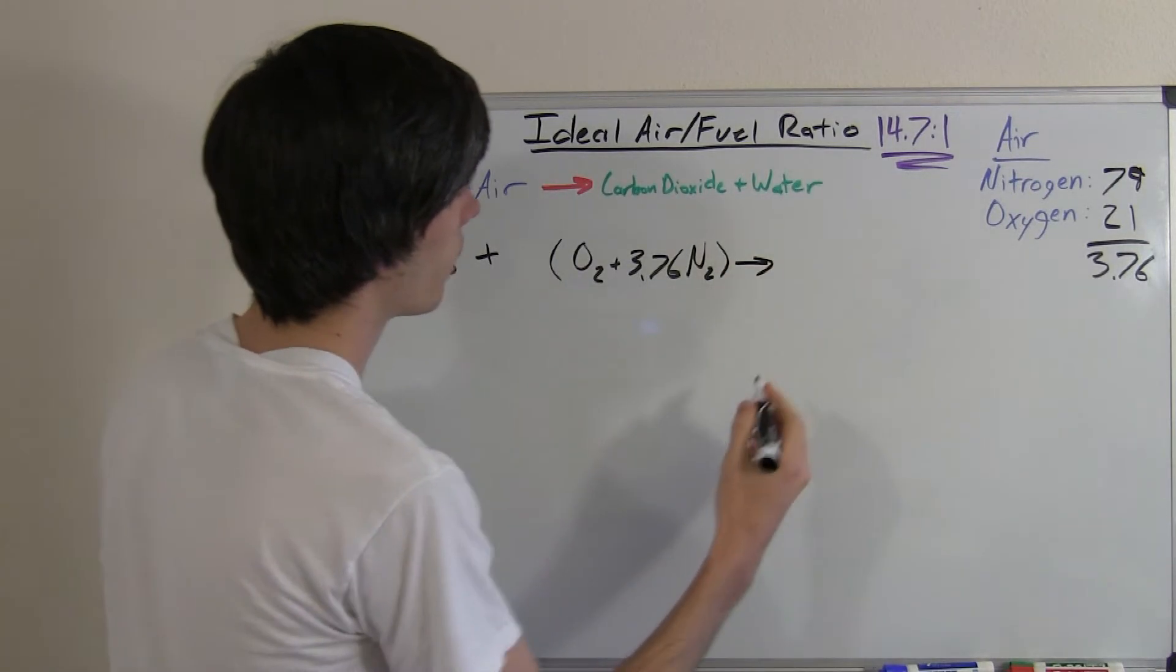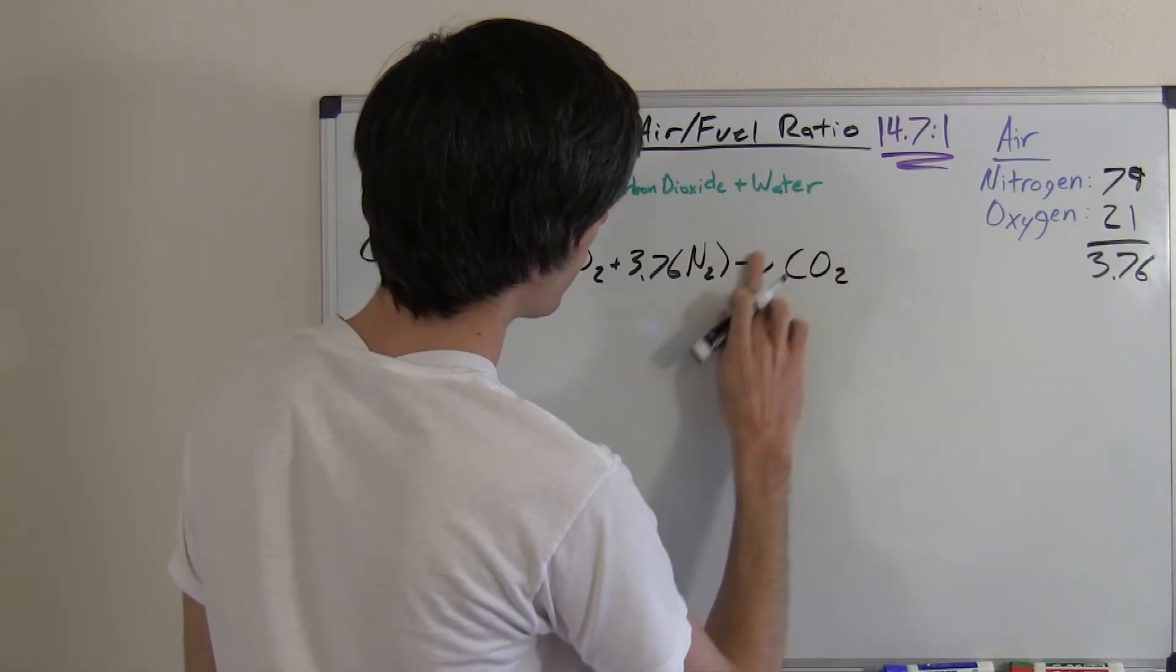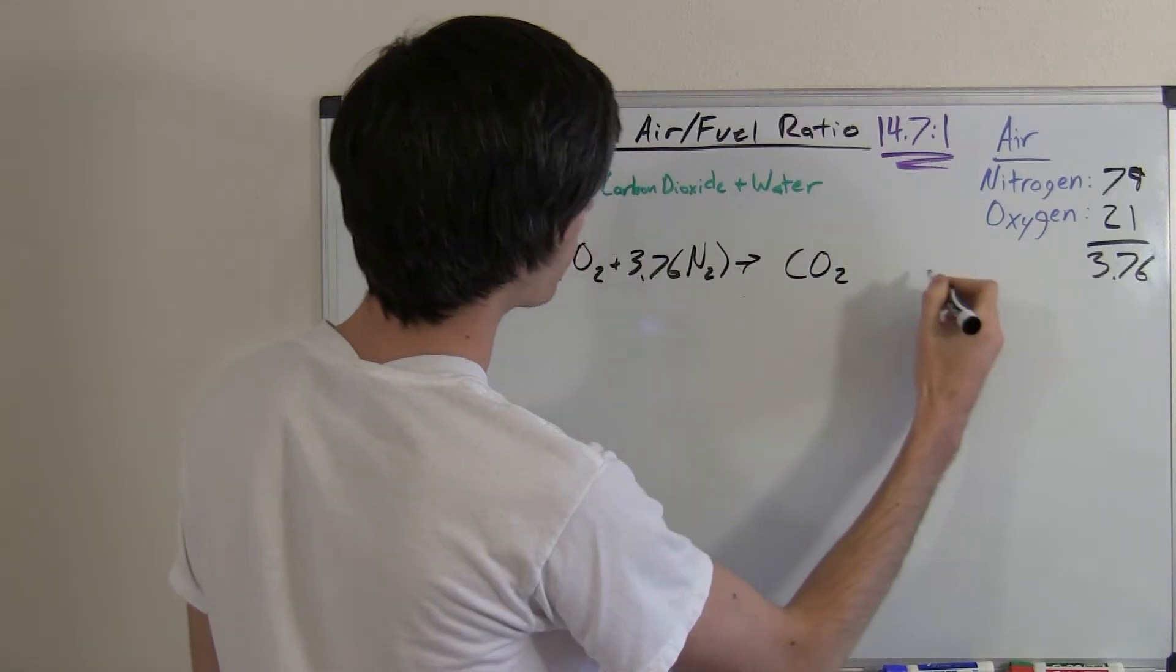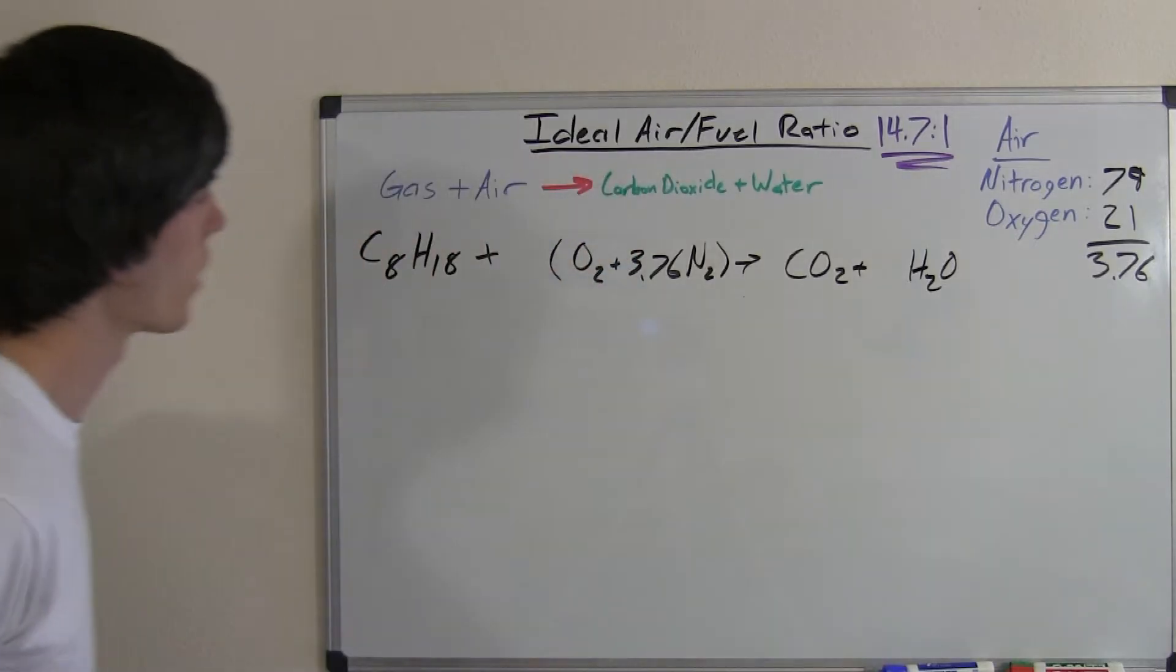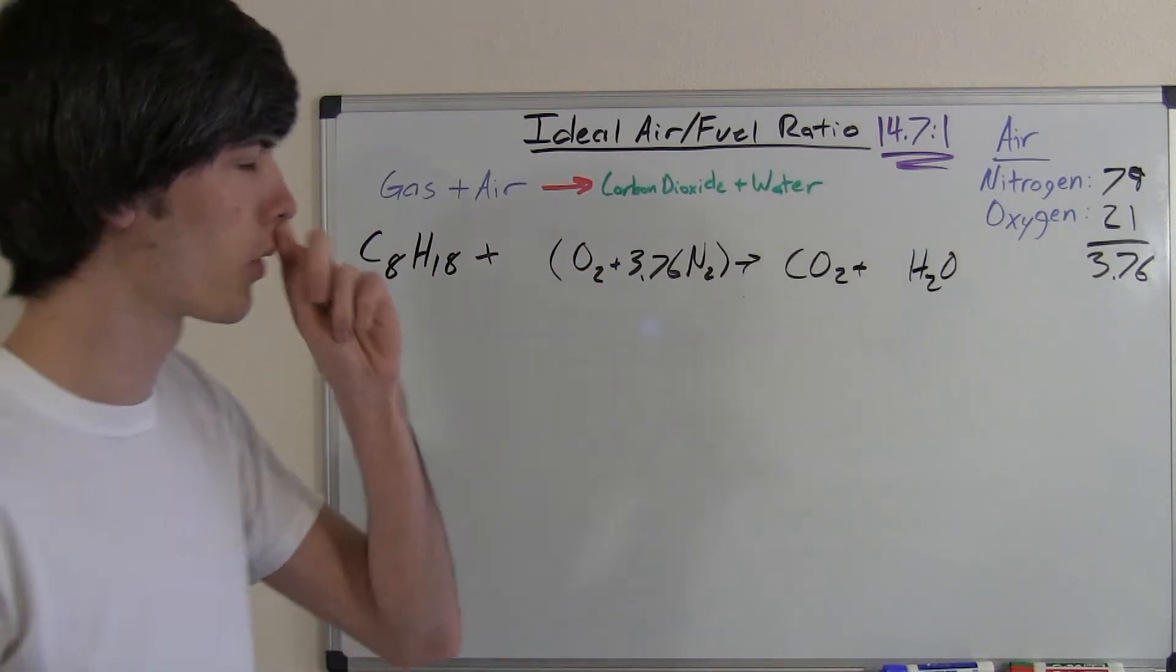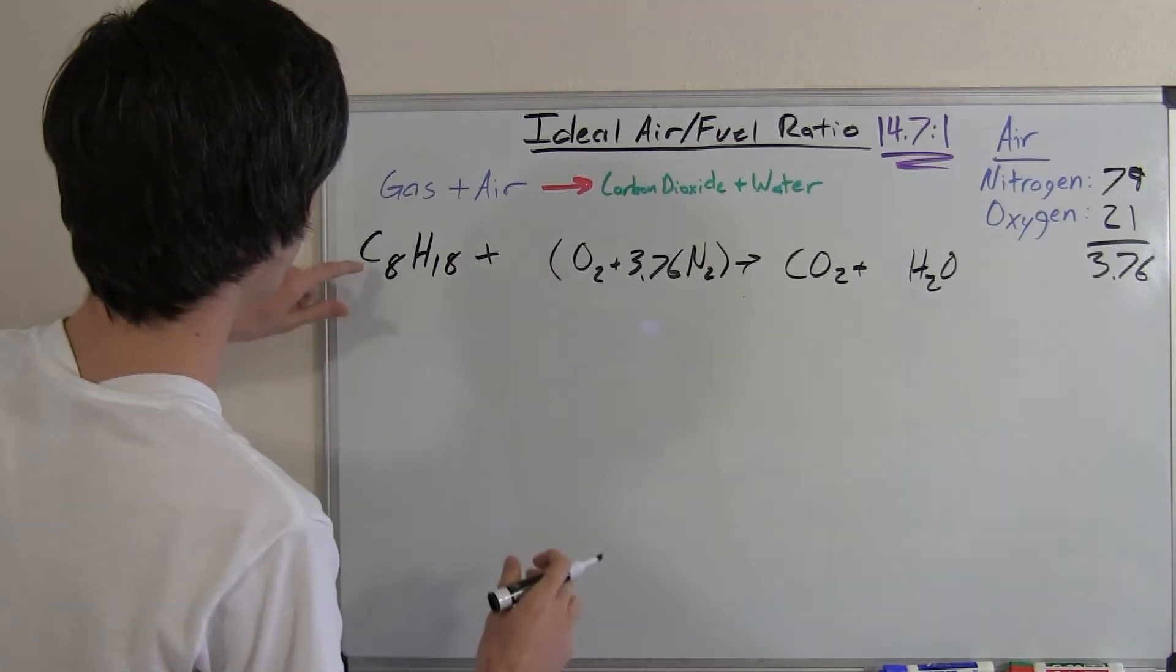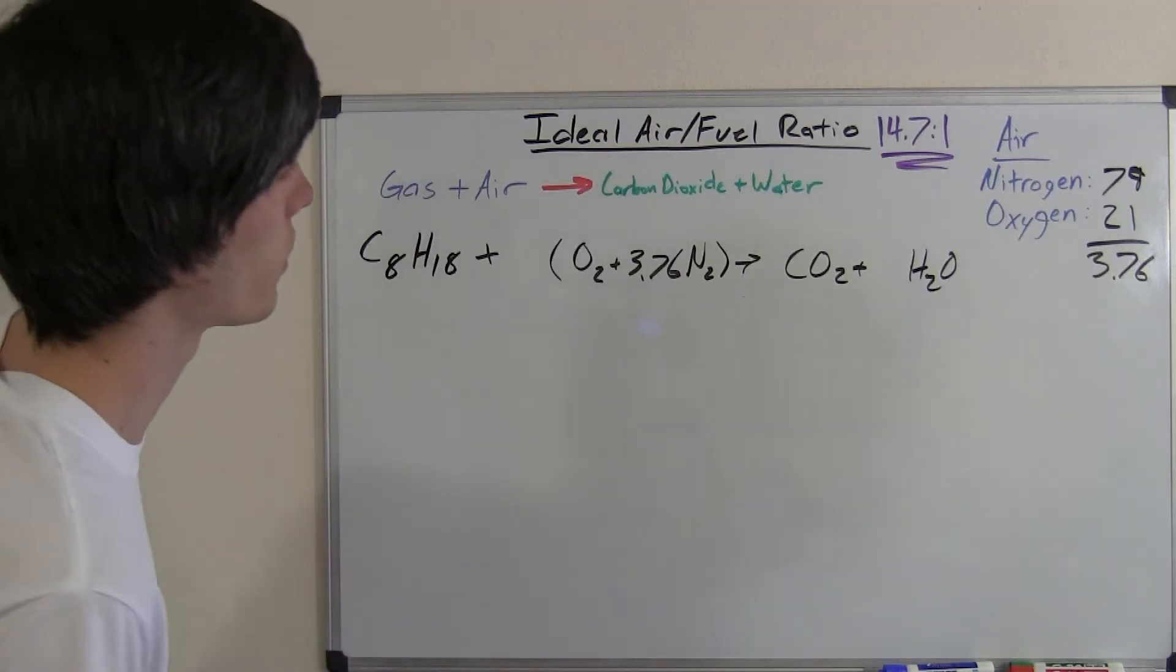So this is going to give us carbon dioxide, CO2, plus water, H2O. So to balance an equation it's pretty simple. All you want to do is just get the same parts of both on each side. So you've got equal carbons, equal oxygens, equal hydrogen, and equal nitrogen.